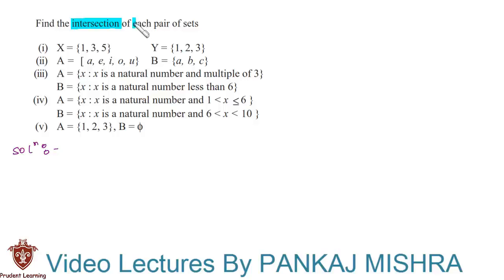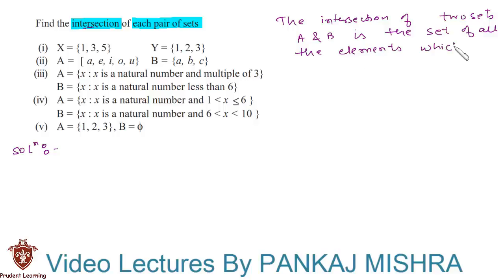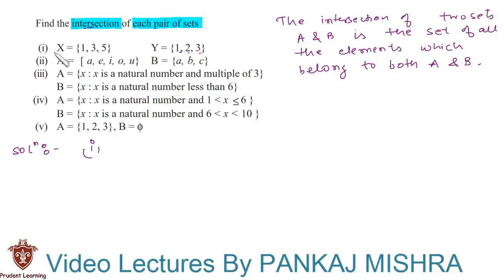In this question we need to find the intersection of each pair of sets. The intersection of two sets A and B is the set of all elements which belong to both A and B. All we need to do is find the common elements between the given pair of sets. Let's begin with the solution.